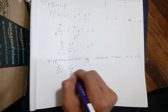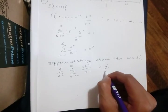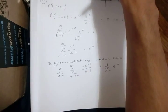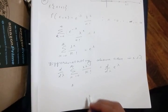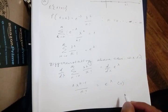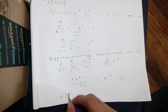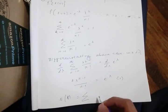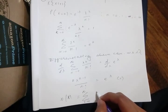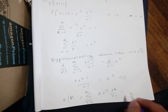Differentiating both sides with respect to lambda, we get K * lambda^(K-1) / K! and the derivative of e^(-lambda) gives -e^(-lambda), with lambda's derivative being 1. This is nothing but the expected value of X. So the expected value of X(t) equals lambda.